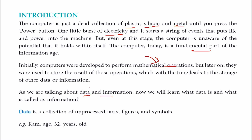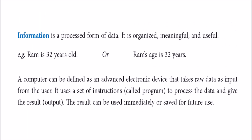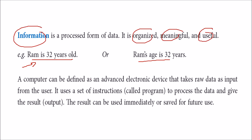What exactly is data and information, or what is the difference between them? Say you collected certain data: name, age 32, some numbers. This is random data — it consists of facts, figures and symbols. Now if we combine it: 'Ram is 32 years old' — this sentence is information because it is meaningful. So organized, meaningful and useful data is nothing but information.